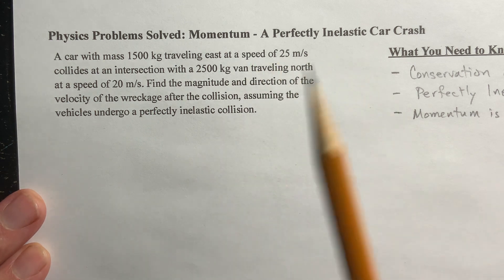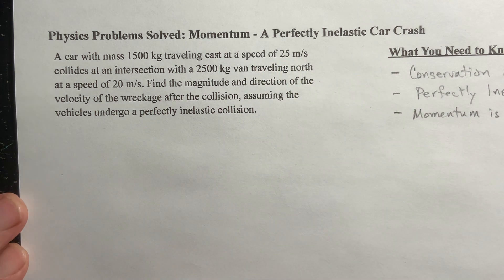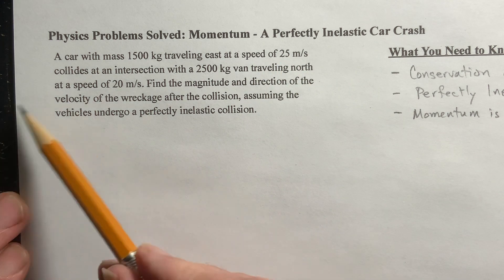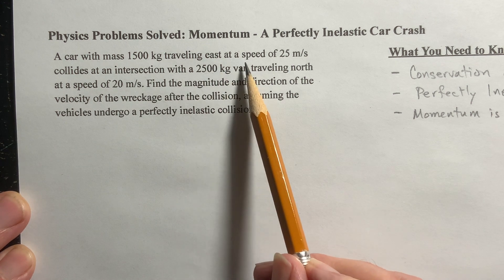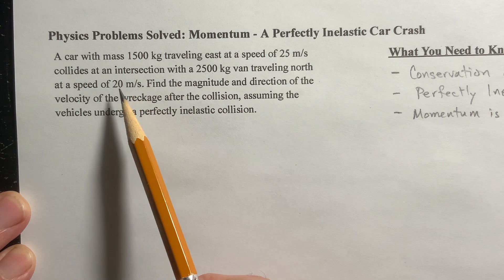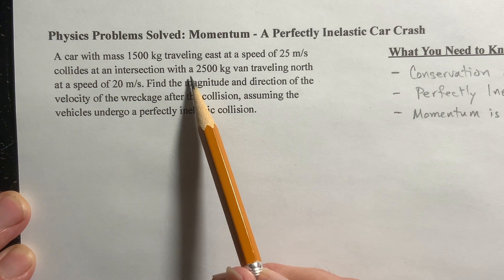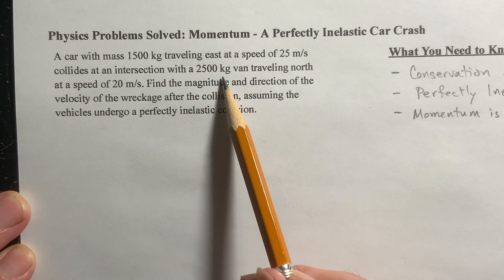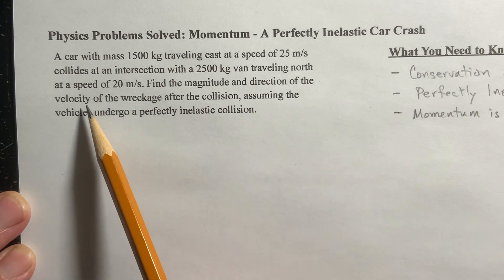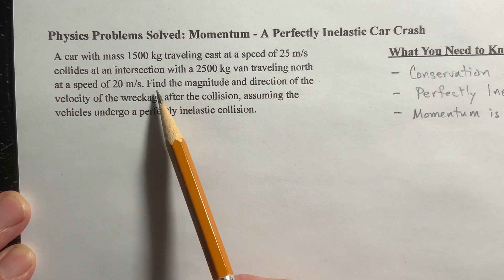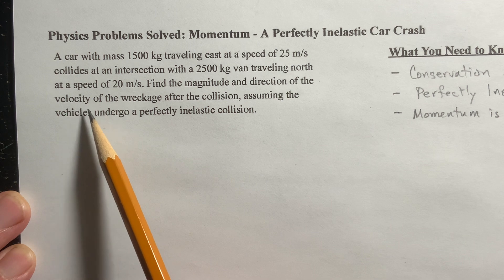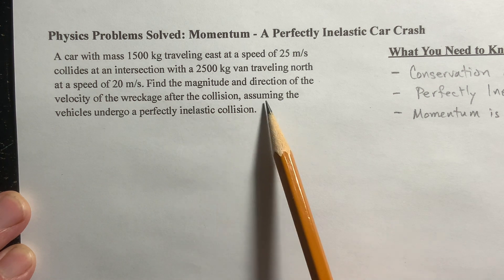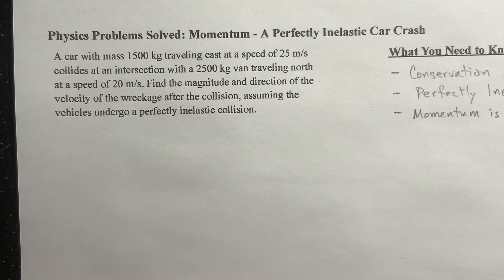I call it a perfectly inelastic car crash. We've got a car with a mass of 1,500 kilograms traveling east with a speed of 25 meters per second. It collides at an intersection with a 2,500 kilogram van traveling north at a speed of 20 meters per second. Find the magnitude and direction of the velocity of the wreckage after the collision, assuming the vehicles undergo a perfectly inelastic collision.